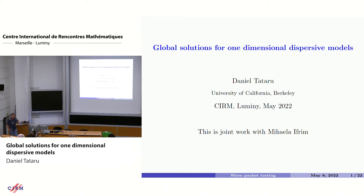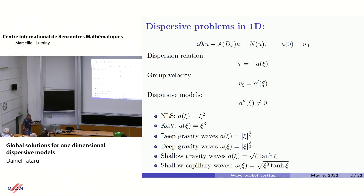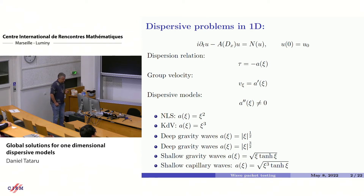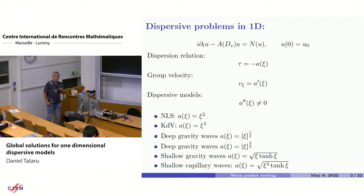Since this is a conference oriented toward fluids, on my first slide is a typical dispersive problem in one dimension. You see the linear part of the equation on the left; we'll put some nonlinearity on the right with some Cauchy data. The symbol of this multiplier, a of xi, gives us the dispersion relation. For each frequency xi we have a group velocity, which is a prime of xi, and the dispersive character manifests in the fact that the second derivative of the symbol a is nonzero. This tells us that waves with different frequencies move with different velocities and thus have lots of opportunities to interact.